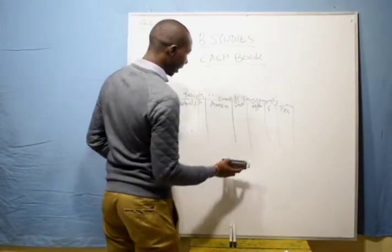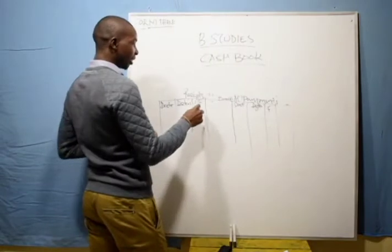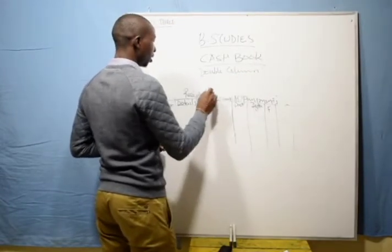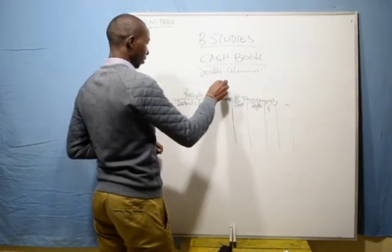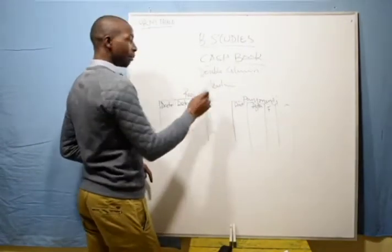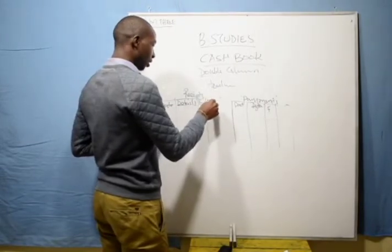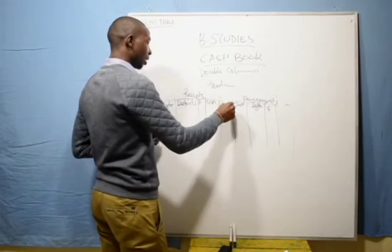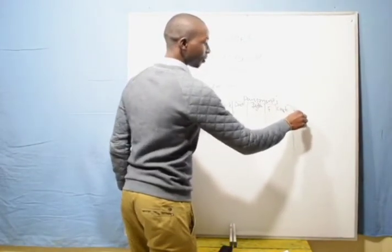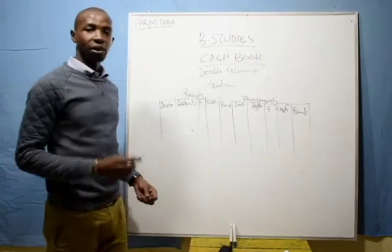Let's see what the double column cash book has. In a double column — or two column — cash book, you must have a heading, with the name of the business. You must have a Receipts side and a Payments side. On the receipts side, you are going to have a Cash column and a Bank column — that is why we call it double. On the payments side, you are also going to have Cash and Bank columns. You do your recording accordingly.